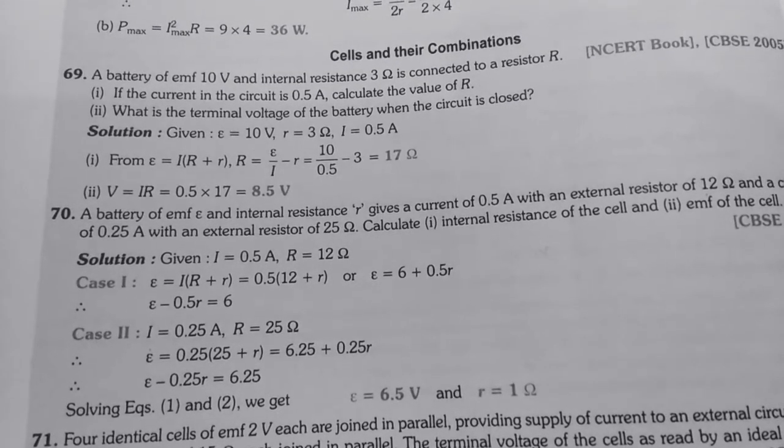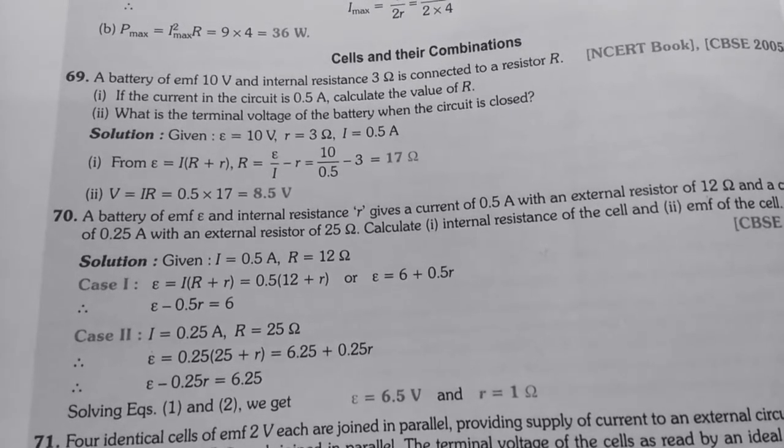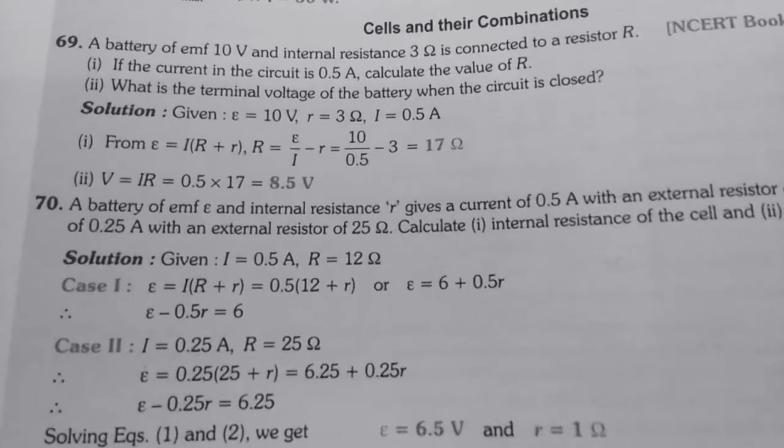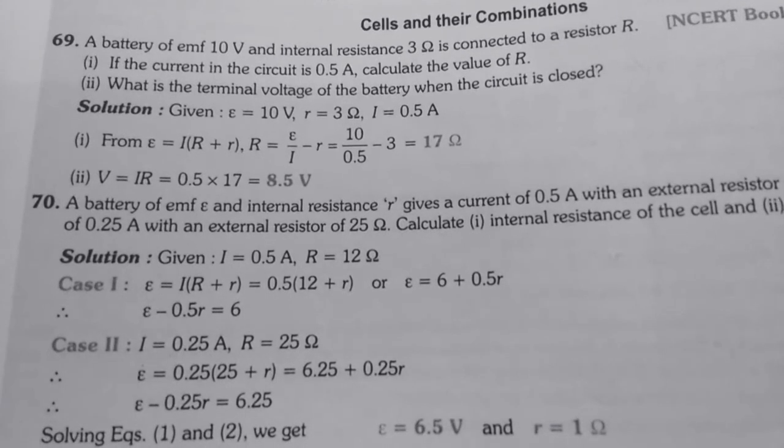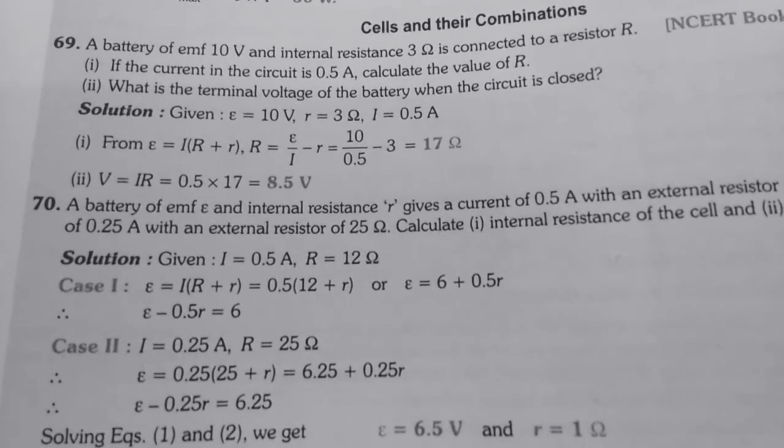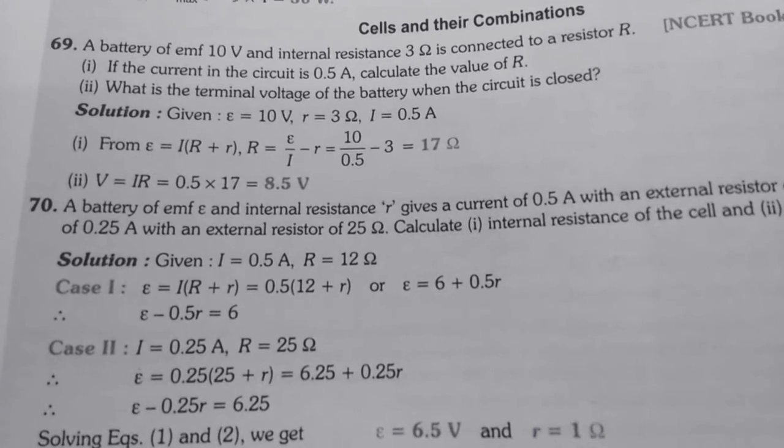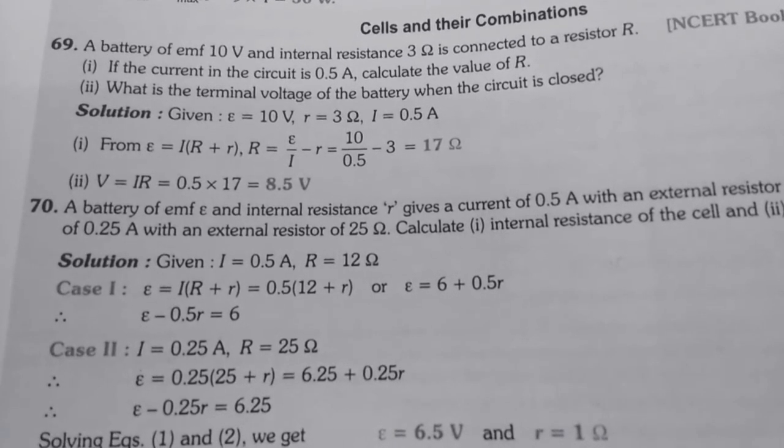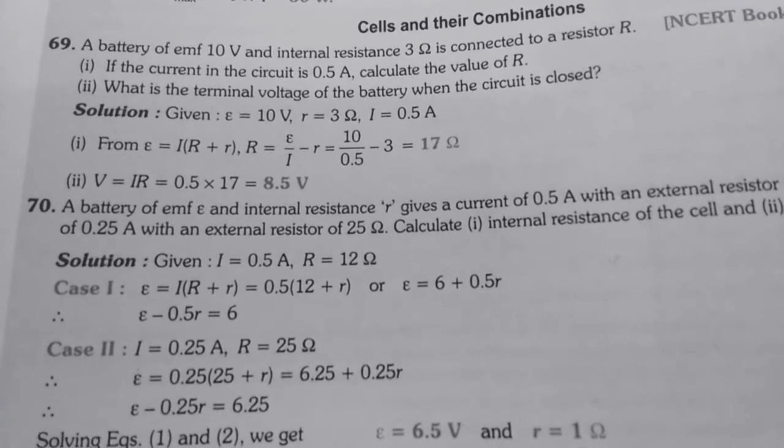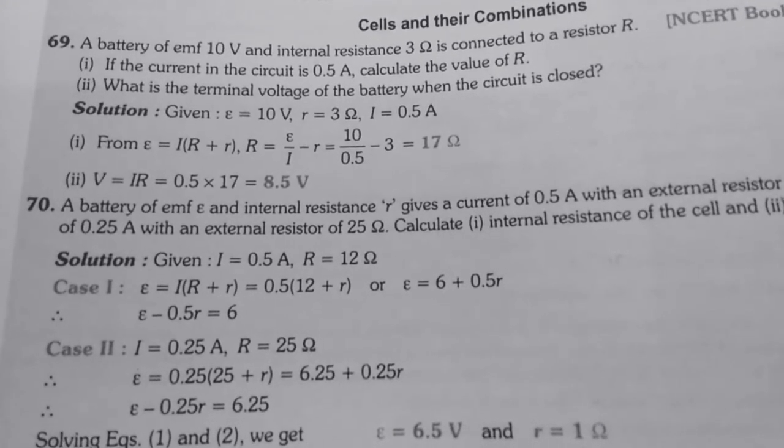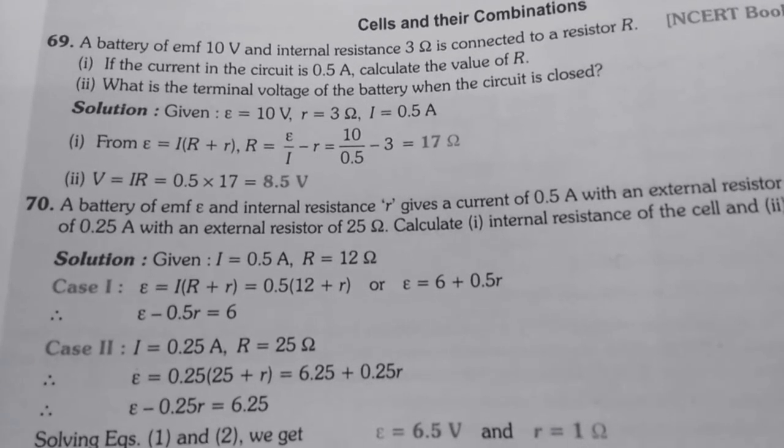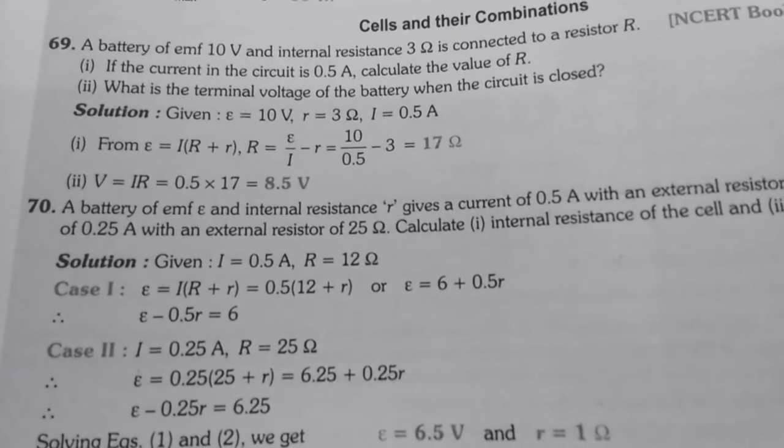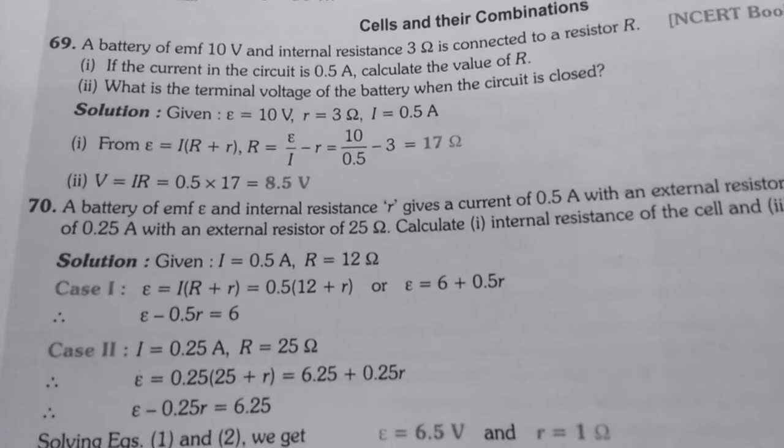In first part, we have to calculate the value of R, i.e. external resistance. Now, we have one relation E equals to I in bracket R plus small r. From there we get the equation R equals to E upon I minus small r. Now, by putting the value of EMF, current and internal resistance in the formula and calculating that we get 17 ohm which is the external resistance.